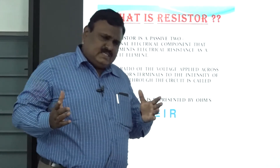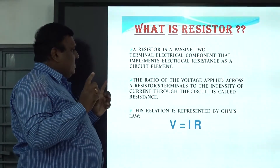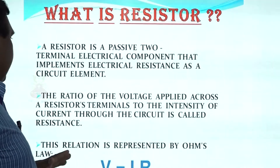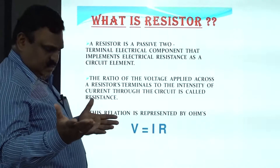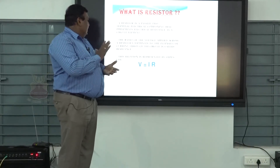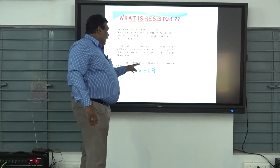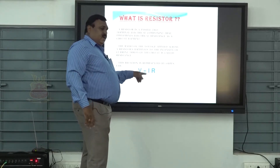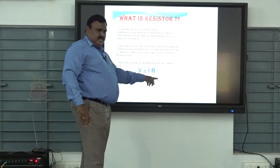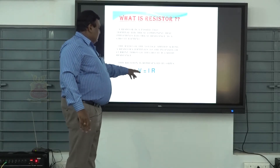Normally a resistor has two terminals, which you can see in the laboratory. The electrical resistance value is identified by the ratio of the voltage applied across the resistance terminals to the intensity of the current through the circuit - that is called resistance. According to Ohm's law, V equals IR. Voltage is proportional to current, giving V equals IR.